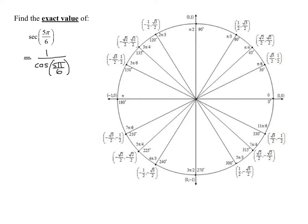So that is going to be 1 divided by, what's the cosine of 5π over 6? It's the x-coordinate, so it's negative the square root of 3 over 2.